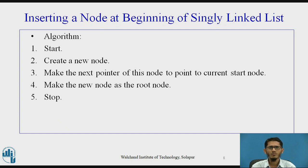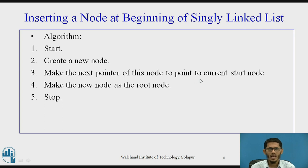The algorithm for inserting a node at the beginning of a singly linked list is: start the process, create a new node, make the next pointer of this new node point to the current start node, then make the new node the new root node, and complete the process.